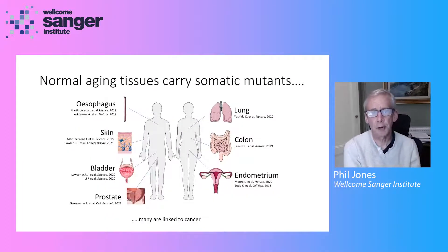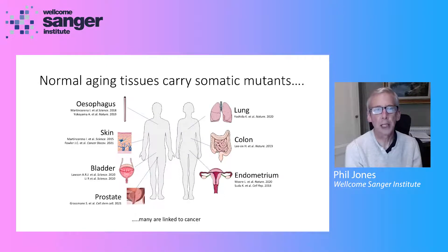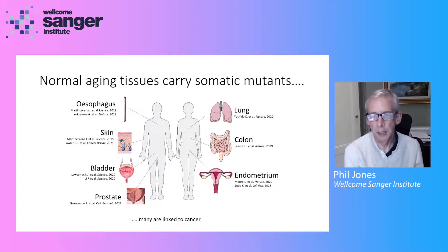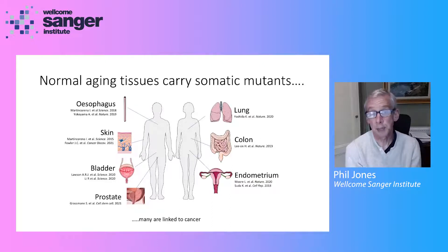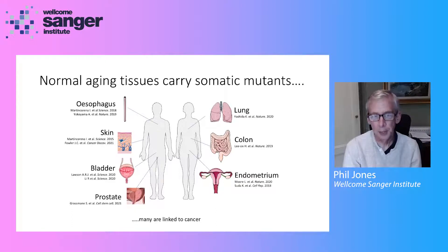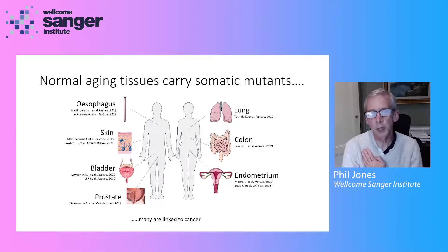It's become very clear over the last few years that most of the epithelial tissues in our body carry progressively more mutations as we get older. Many of these mutations that spread through our tissues are linked to cancer and some to other benign diseases. Today, for reasons of time, I'm going to focus on one of these tissues: the esophagus.